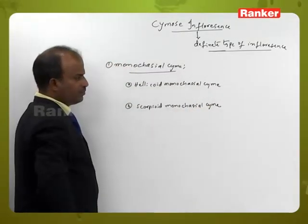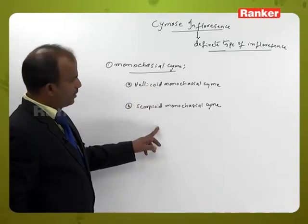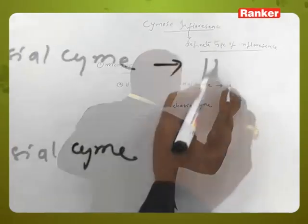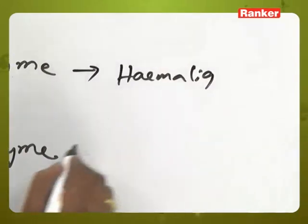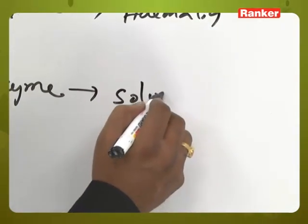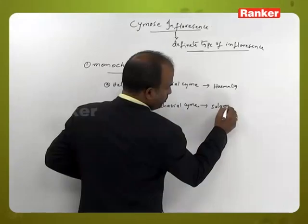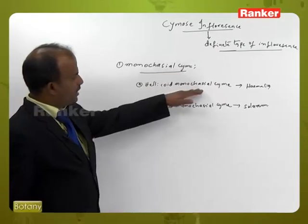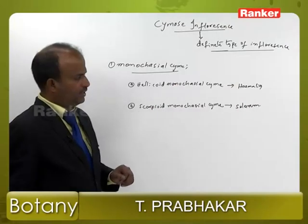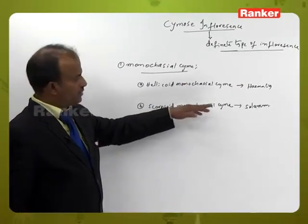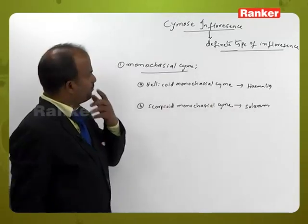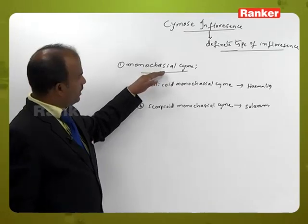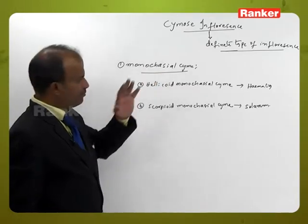For helicoid monochasial cyme, the example is Heamelia. For scorpioid monochasial cyme, the example is Solanum. In monochasial cyme, always a single branch arises.